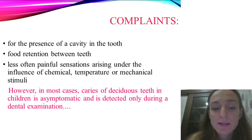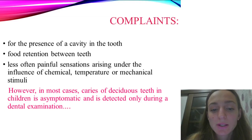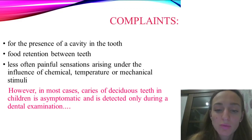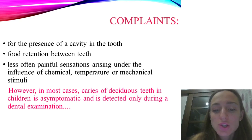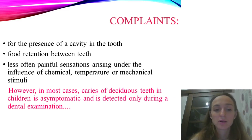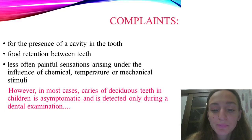Acute initial caries in deciduous teeth is a fast-flowing stage that can be rarely clinically diagnosed. Caries spots are more often clinically defined on vestibular surfaces of the deciduous incisors, as these segments can be easily examined. After removal of dental deposits and drying the surface, the doctor can see white enamel loci which have lost their natural shine. Acute initial caries can transform into a chronic process or into acute superficial caries. Superficial caries in deciduous teeth usually has an acute progress and is a result of acute initial caries.